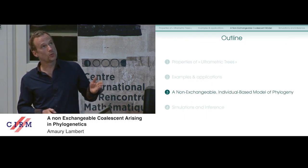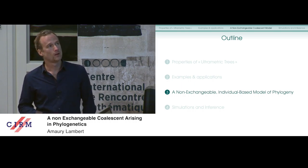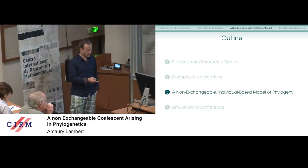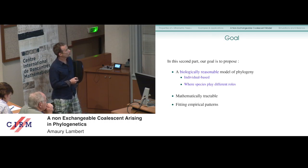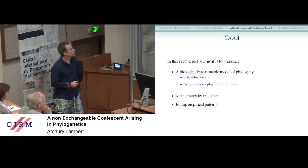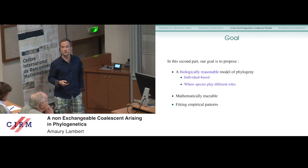What we wanted to do with Nicolas Artillo, Todd Parsons, and Guillaume Achaz is to design a non-exchangeable individual-based model of phylogeny that is biologically reasonable, starts from the description of individuals where species are different — because if species don't play different roles you always get the same topology distribution — and is mathematically tractable, fitting empirical patterns such as the imbalance of real phylogenies.